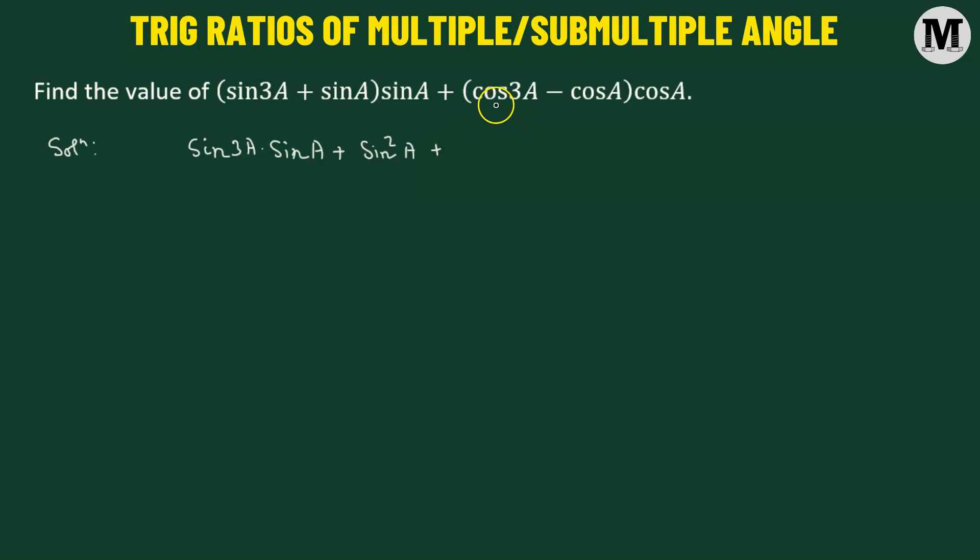Similarly in the second term we have cosine of 3A minus cosine of A multiplied to cosine of angle A. So we get cosine of 3A times cosine of A minus cosine of A times cosine of A, that will be cosine squared A.